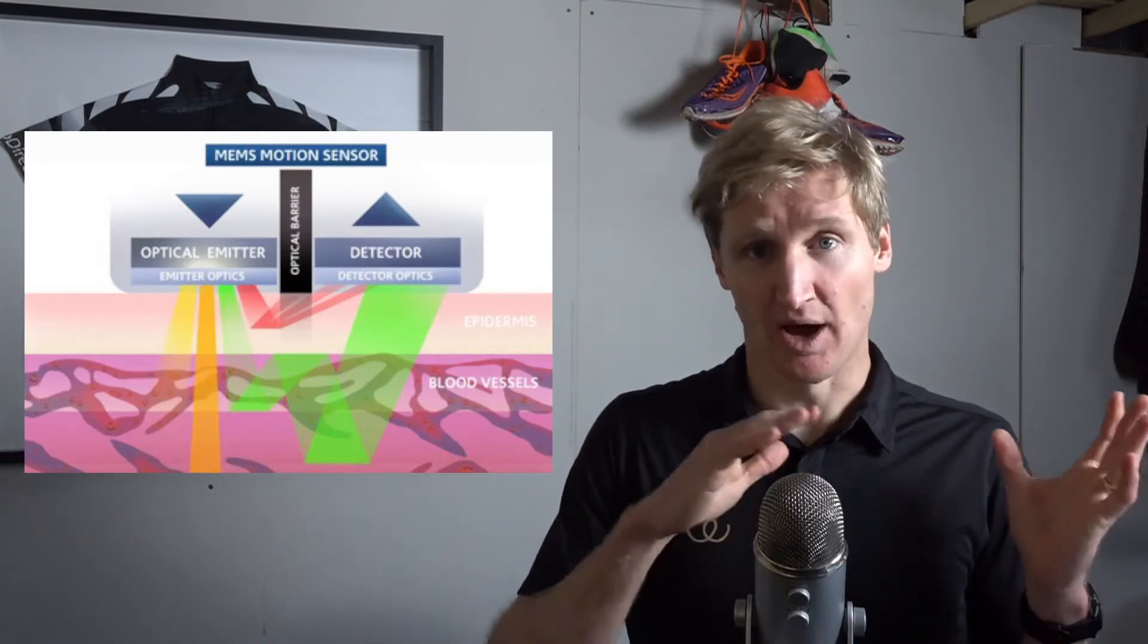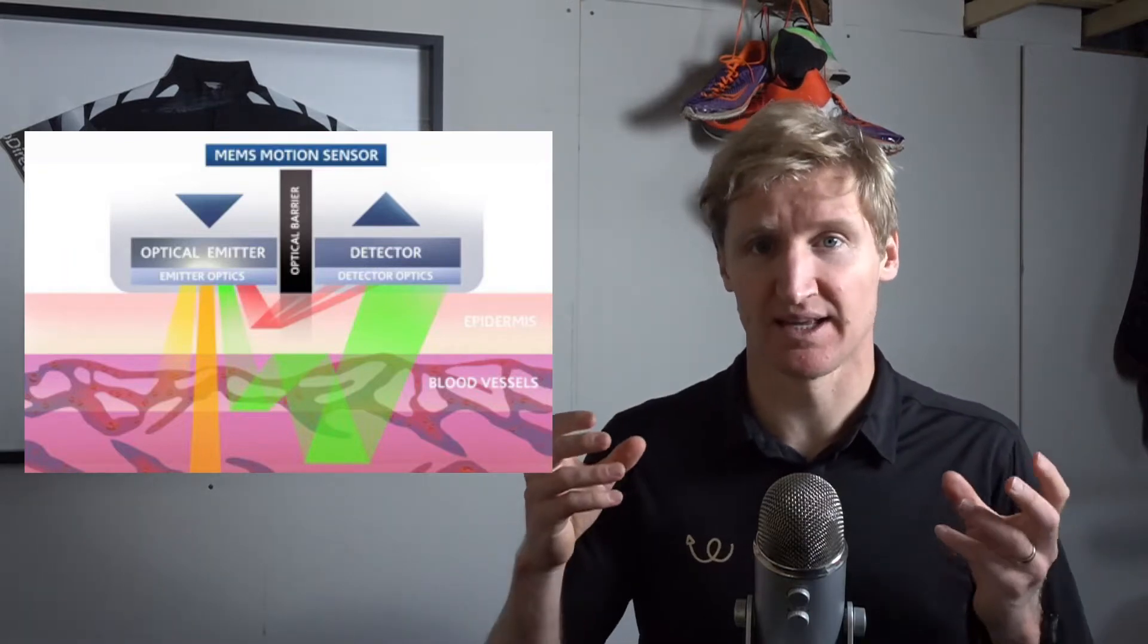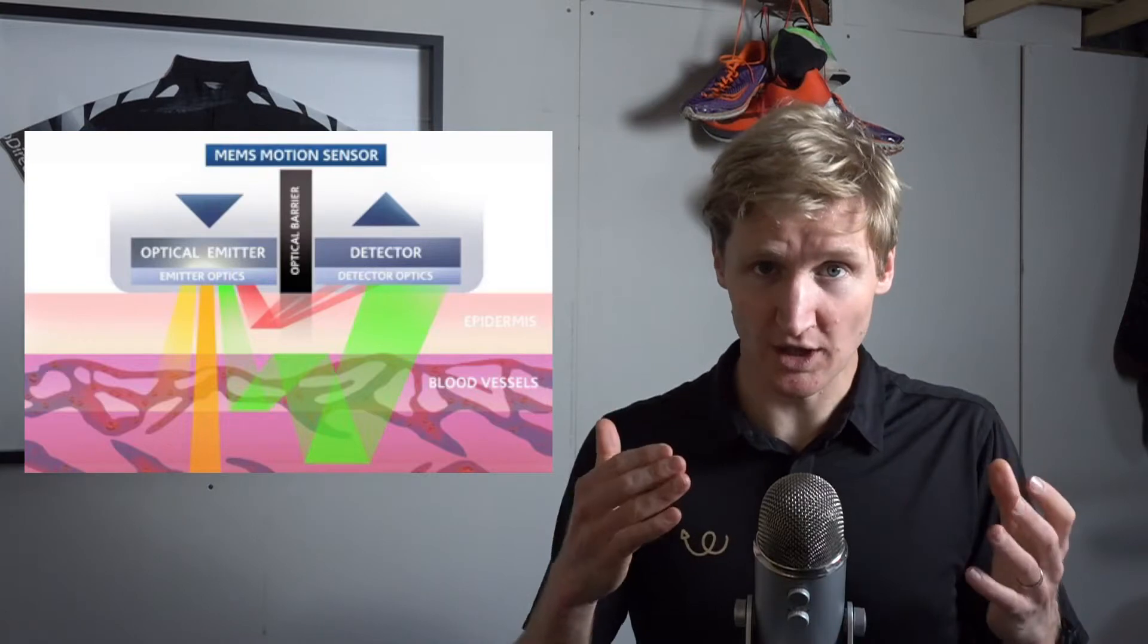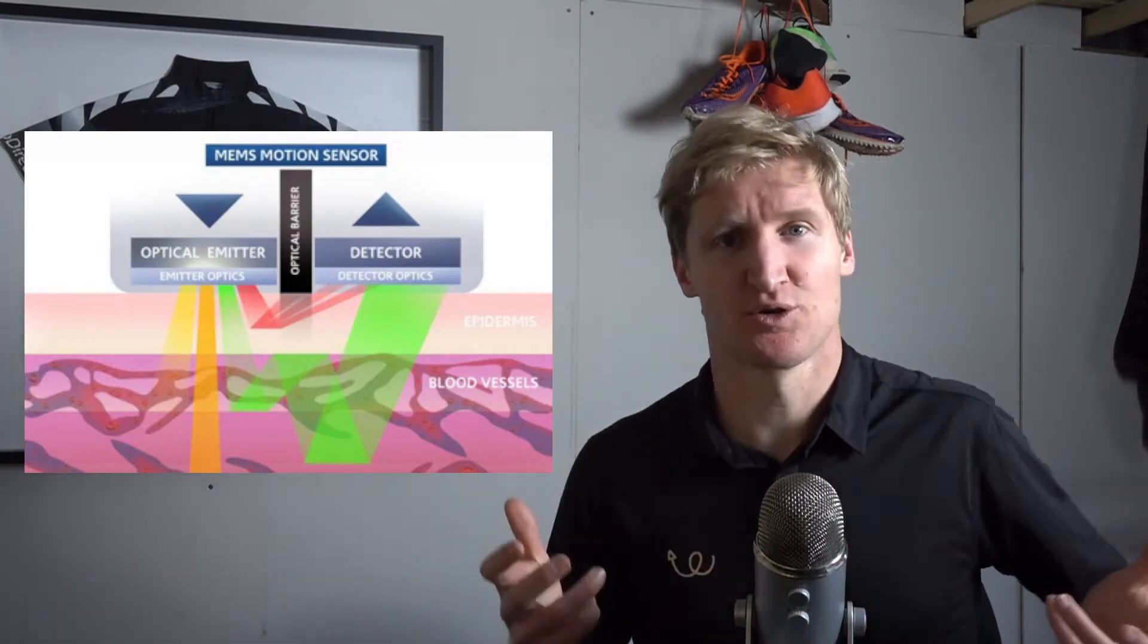And this is where the inaccuracies come in this whole measurement process. So the light is emitted and it is absorbed by the tissue that sits between your watch and then your blood vessels.